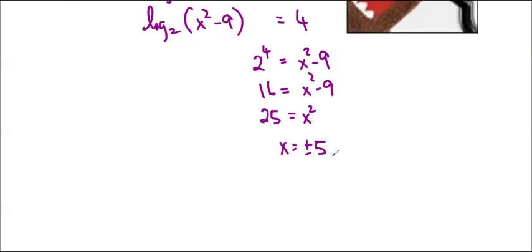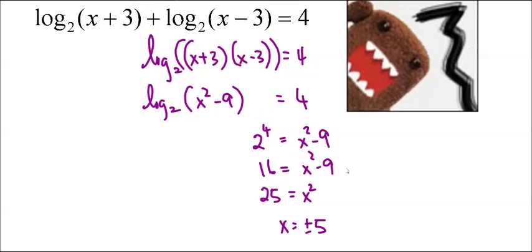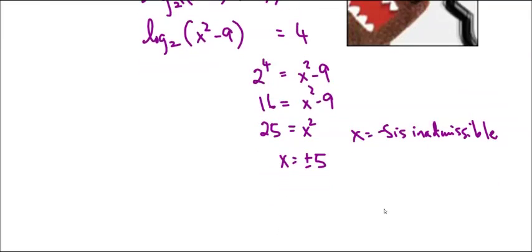And again, we want to check to see whether or not that makes it inadmissible or not. So the negative 5, if I put negative 5 in here, I actually get a negative value in the argument, and that's not allowed. So x equals negative 5 is inadmissible. You always have to check if anything is inadmissible, so we know the answer is x equals 5.